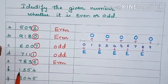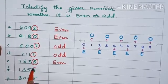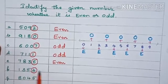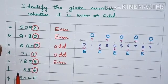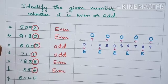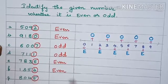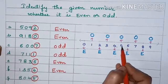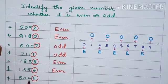We will go to another example: 1,354. So the last digit is 4. You can see here, children — 4 is an even number. So this number is an even number. The next one: 8,045. So what is the last digit here? 5. You can see here, 5 is an odd number. So this 8,045 is an odd number.